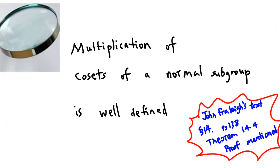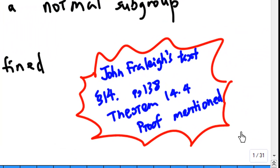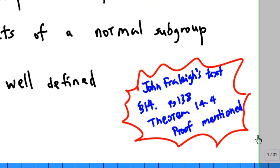Hi, in this recording I am going to show you that multiplication of cosets of a normal subgroup is well defined. This proof is also mentioned in John Fraleigh's text, section 14, page 138-14.4.